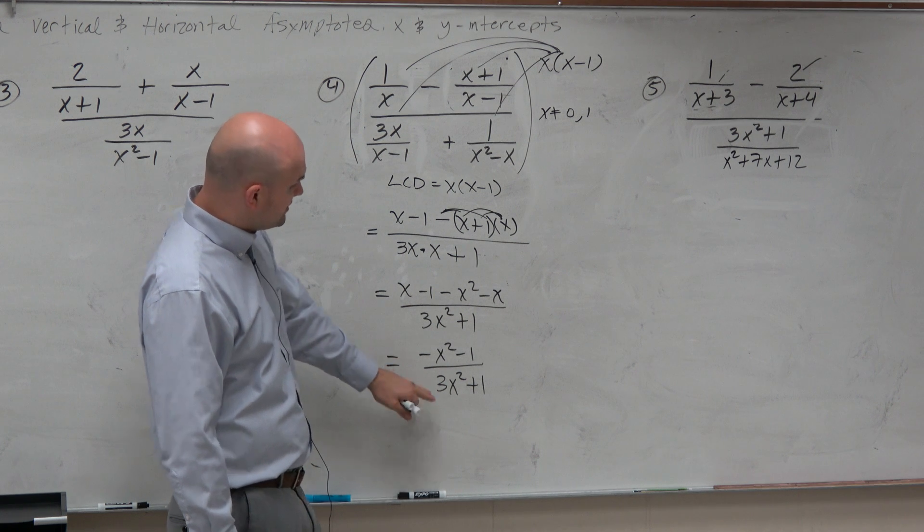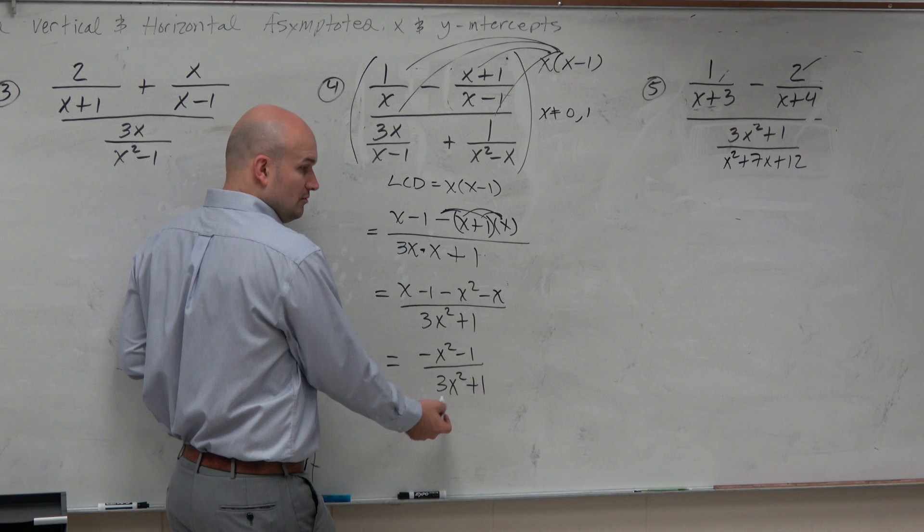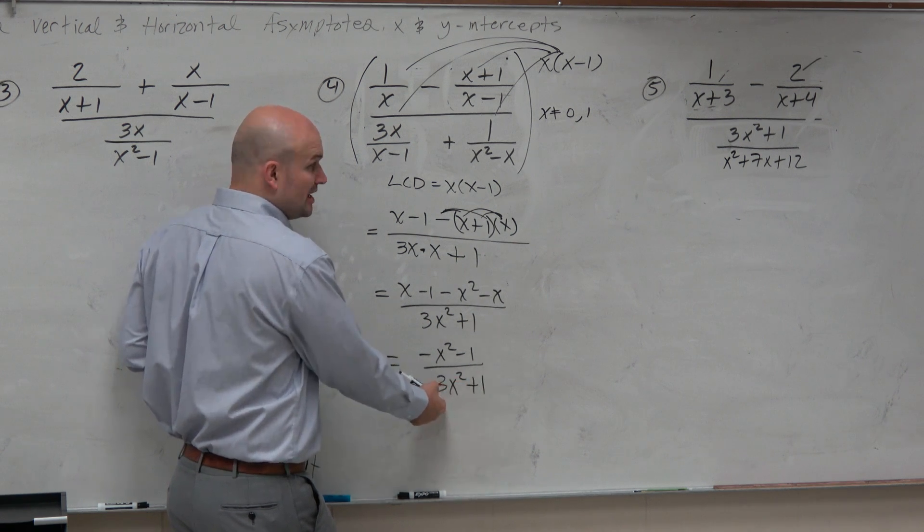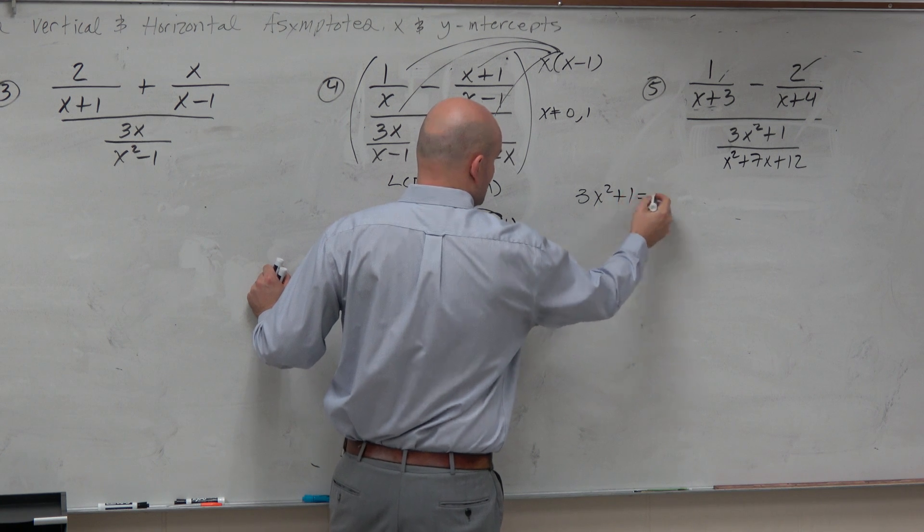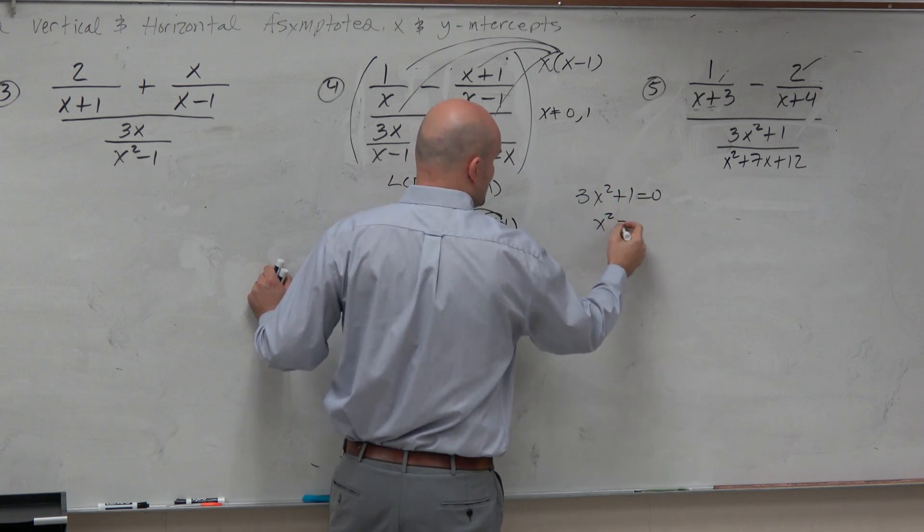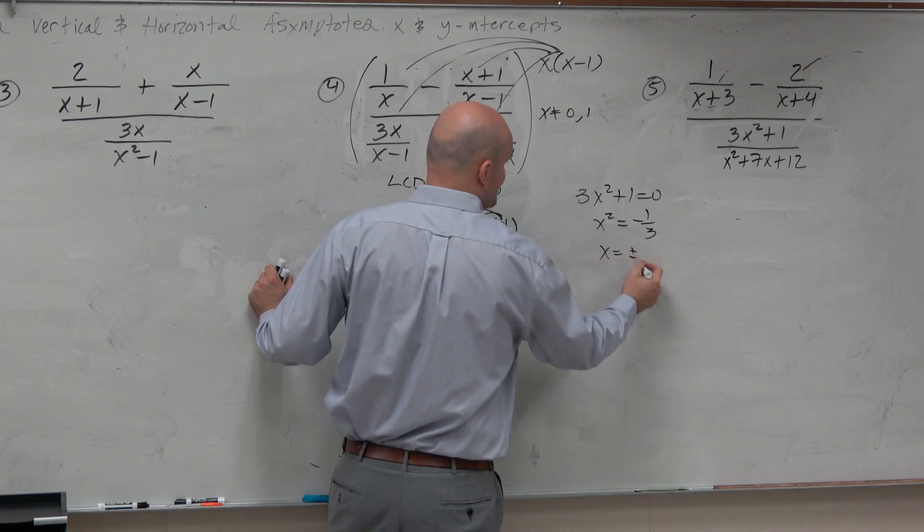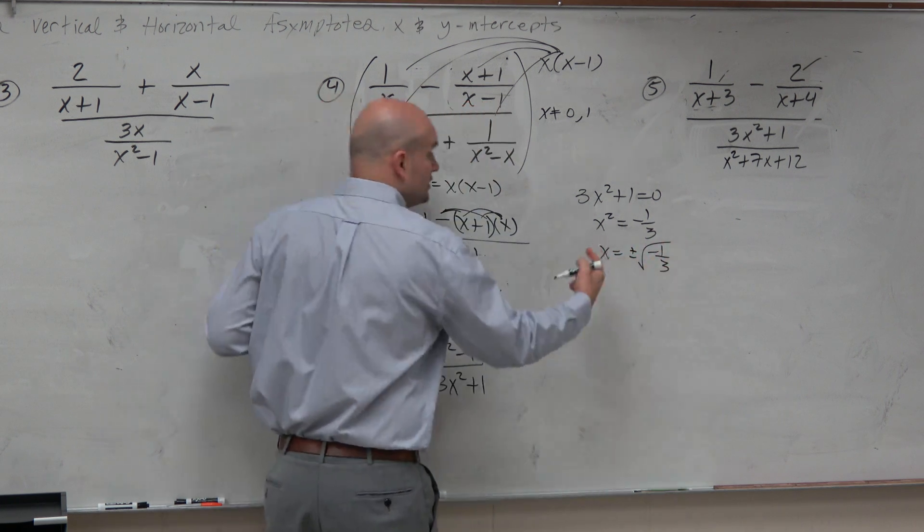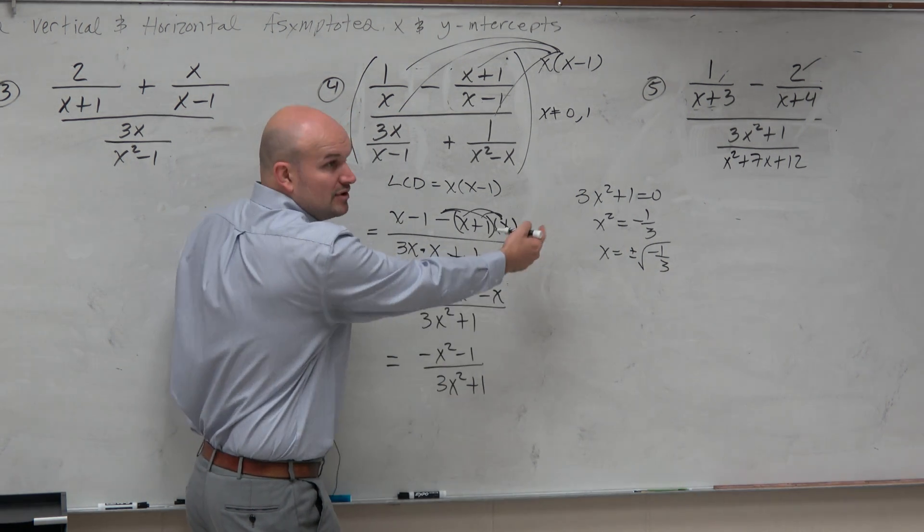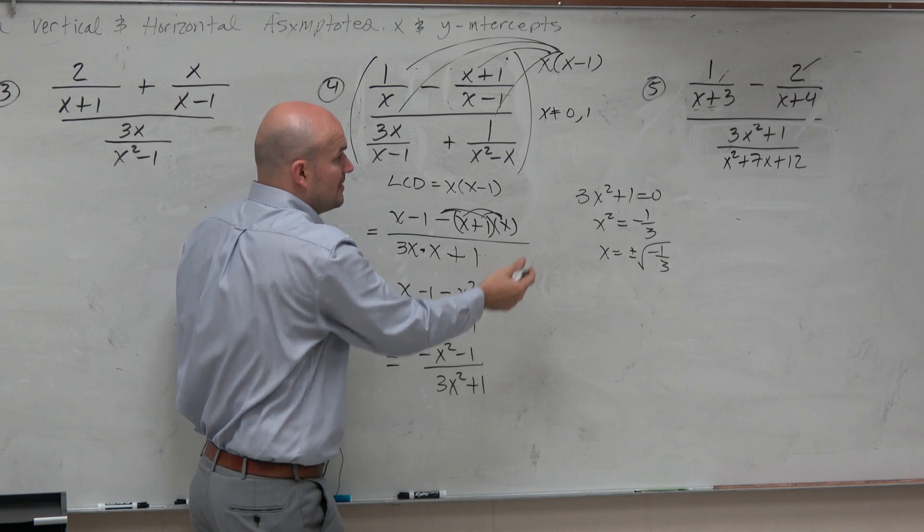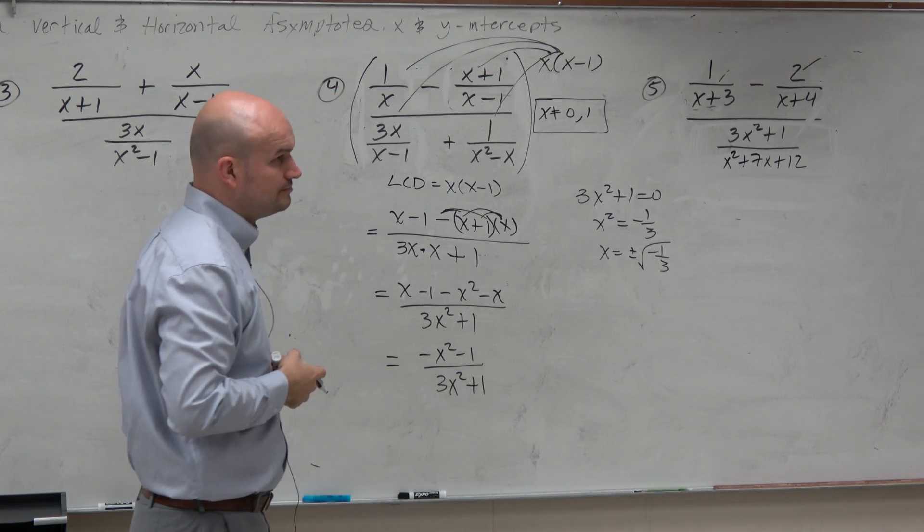And therefore, now we look at this. And now the other thing is we want to look at this restriction. Do we have any restriction here? Well, we know that this cannot equal 0, right? So if we set this equal to 0, 3x squared plus 1 is equal to 0, we'd get x squared is equal to negative 1 third. x would equal plus or minus the square root of negative 1 third. Is there any real numbers that makes this denominator equal to 0? No, because taking the square root of a negative number, that's going to be a complex number, right? So therefore, these are our only restrictions.